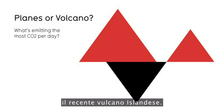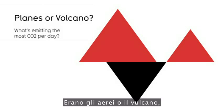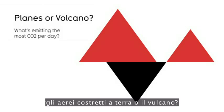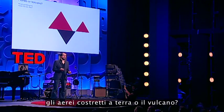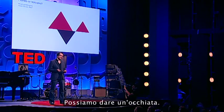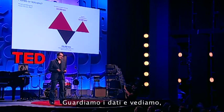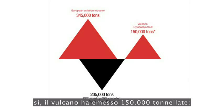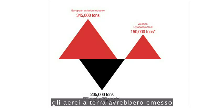The recent Icelandic volcano — which was emitting the most CO2? Was it the grounded planes or the volcano? We look at the data and we see: the volcano emitted 150,000 tons. The grounded planes would have emitted 345,000 if they were in the sky. So essentially, we had our first carbon neutral volcano.